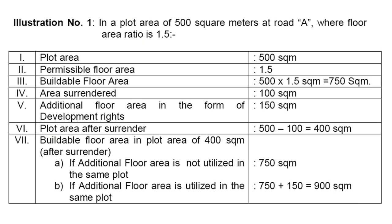Here is a rough calculation showing how TDR is calculated. In a plot area of 500 square meters with a Floor Area Ratio (FSI) of 1.5, the buildable floor area is 500 multiplied by 1.5, which equals 750 square meters. If 100 square meters of that plot is surrendered for TDR, you receive additional floor area: the surrendered 100 square meters at an FSI of 1.5 gives an additional 150 square meters. After surrendering, the remaining plot area is 400 square meters, with a buildable floor area of 750 square meters. If the additional floor area is utilized on the same plot, the total becomes 750 plus 150, which is 900 square meters.